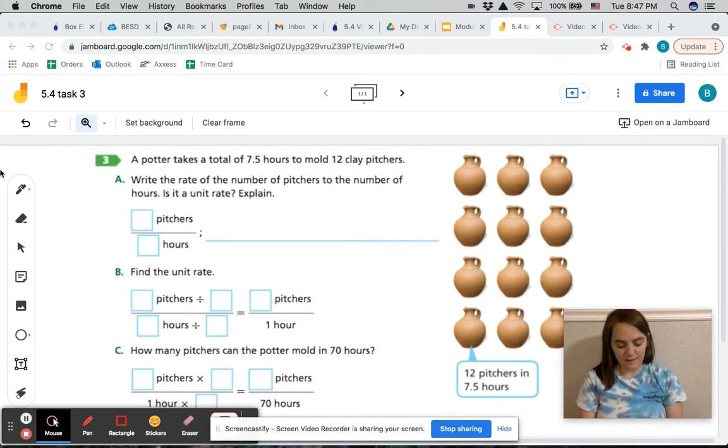All right, for our last task, number 3, we have a potter takes a total of 7 1/2 hours to mold 12 clay pitchers. And you'll see that picture over on the side here, 7 1/2 hours to mold 12 clay pitchers.